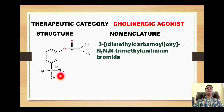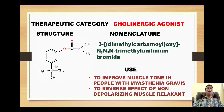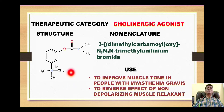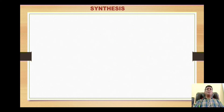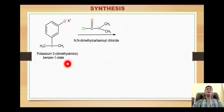So the IUPAC name is 3-(N,N-dimethylcarbamoyloxy)-N,N,N-trimethylanilinium bromide. This compound is very important and is used to improve the muscle tone in people with myasthenia gravis — the condition where there is reduced concentration of acetylcholine and muscle tone is greatly decreased. Its other use is to reverse the effect of non-depolarizing muscle relaxants employed during general surgical processes, so after surgery, neostigmine is given to reverse muscle tone.